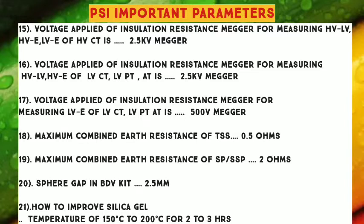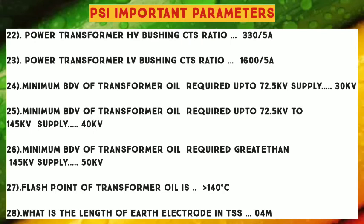Number 20: Sphere Gap in BDV Kit — 2.5 Millimetres. Number 21: How to improve Silica Gel — heat at temperature of 150 degrees C to 200 degrees C for 2 to 3 hours. Number 22: Power Transformer HV Bushing CTs Ratio — 335.